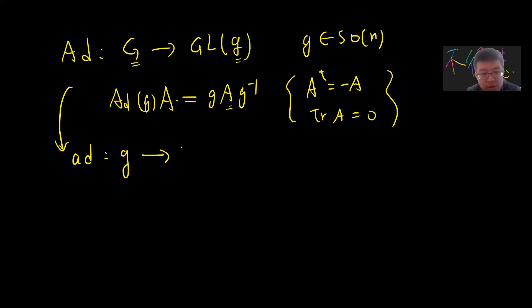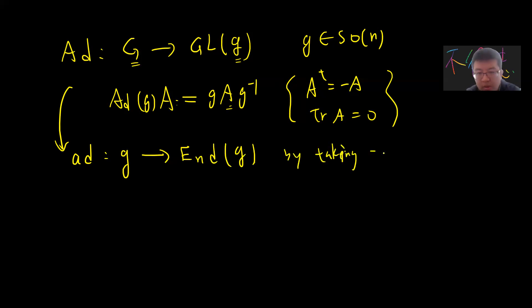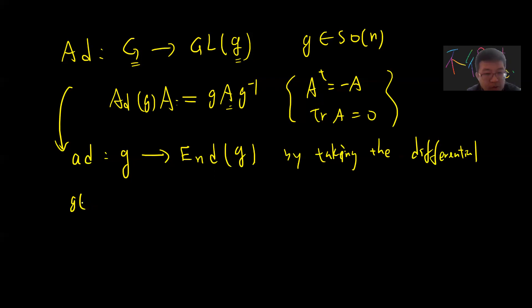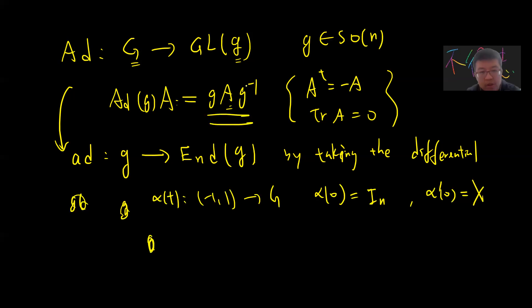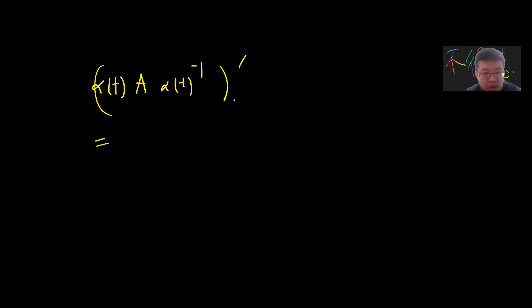To see this, work with a curve alpha(t) from (-1,1) to G, where alpha(0) is the identity and alpha'(0) equals X (an element of the Lie algebra). Then substitute G with alpha(t) in the conjugation formula to get alpha(t) A alpha(t)^{-1}, and differentiate with respect to t.